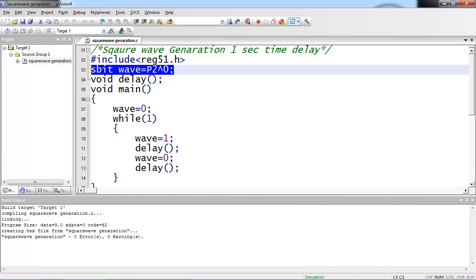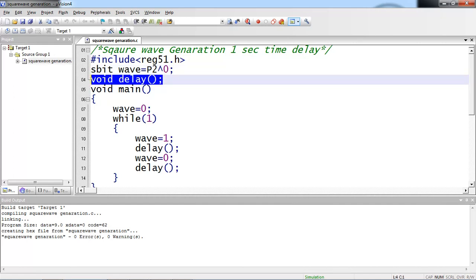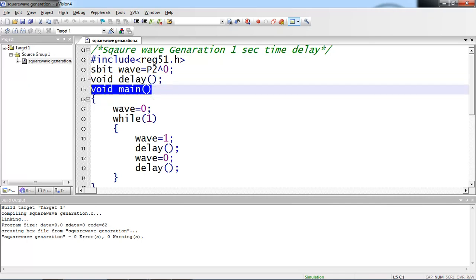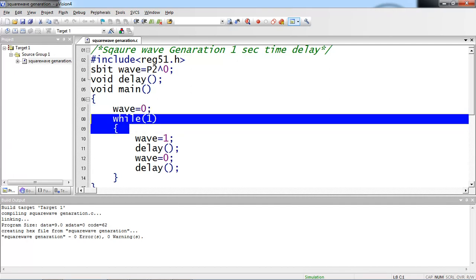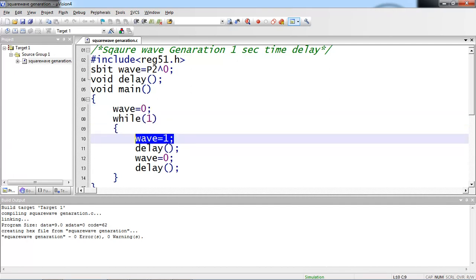I am just using this user-defined declaration, which is wave. I just given connection across P2.0 pin. And I am taking one user-defined function, which is delay. And main, this logic starts from main. Initial logic is 0 and while of 1. And I am giving logic 1 for this wave input.